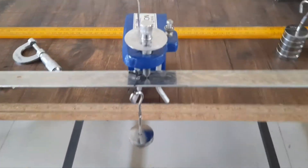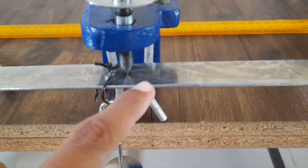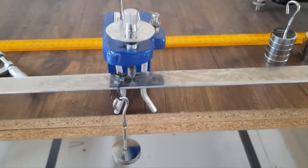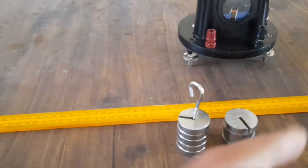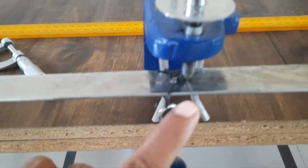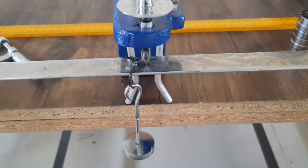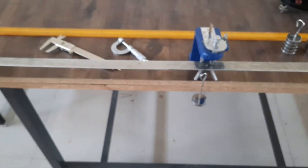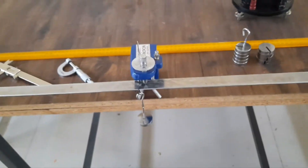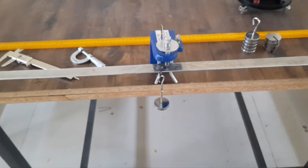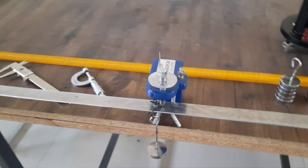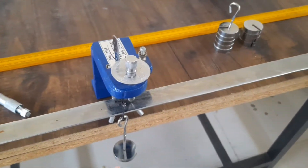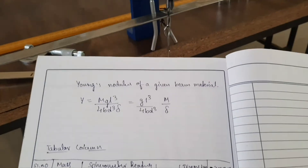To know whether the screw has touched the beam or not, in some experiments they may include a galvanometer so that we can observe the deflection when the screw touches the beam. However, we are just finding Young's modulus here, so we are not including the galvanometer. We can find Young's modulus once we get the reading from the spherometer.